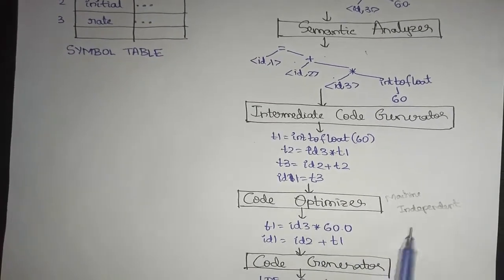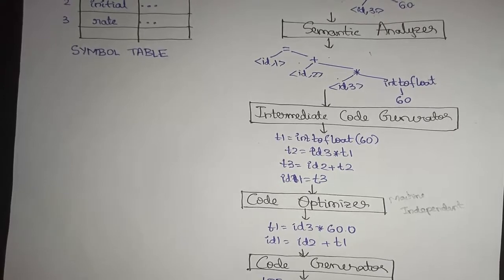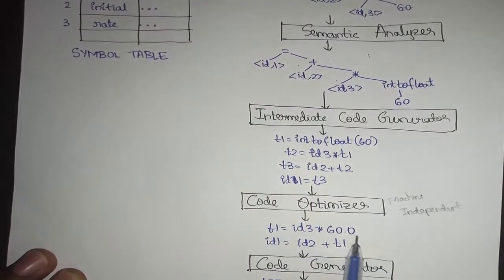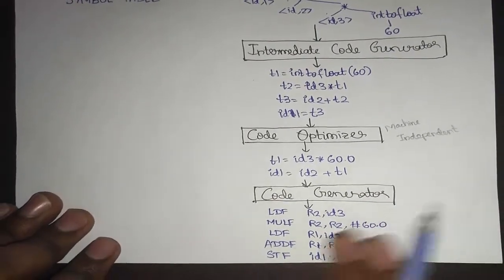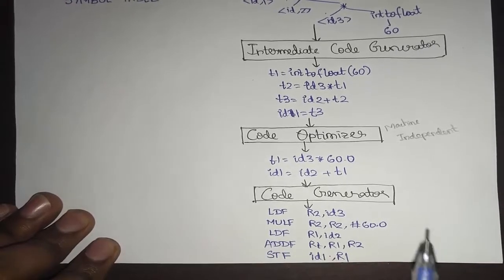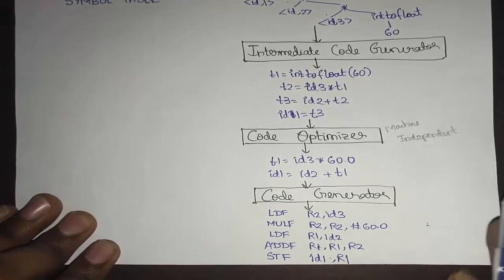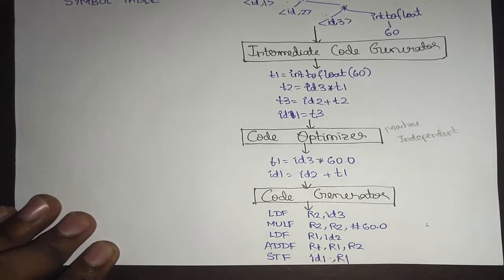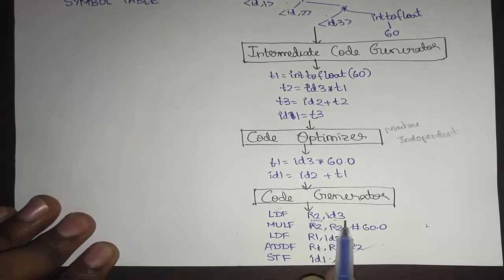The 3-address code is then optimized using machine-independent code optimization, where no knowledge of specific machines is needed — up to this point the processes are the same across machines. After that, machine-dependent code optimization comes into picture in the code generator, where depending on the machine, memory allocation and storage management may differ, producing differences in the target machine code generated.